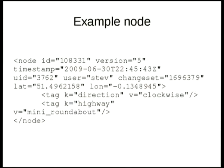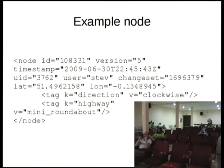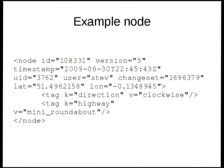Version equals five means this particular node has been updated four times since it was originally created. The timestamp is the last time it was updated. The UID and user are who did the last update, and the change set is the change set that update was part of. All of those are being ignored in my example. It has latitude 51.496 and longitude minus 0.13, so it has a location and a direction.